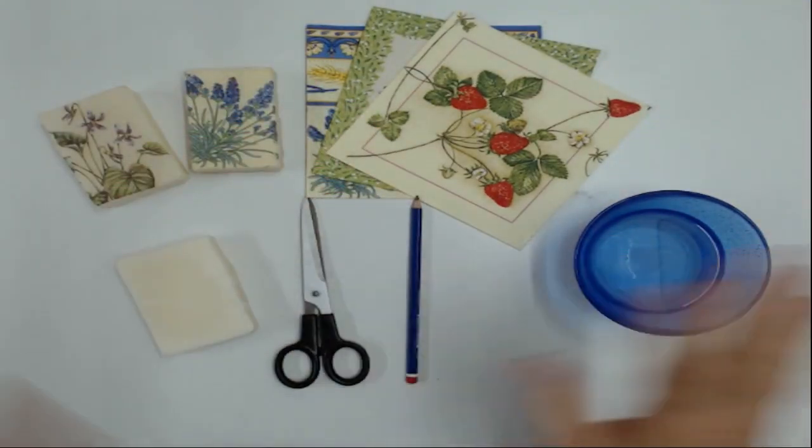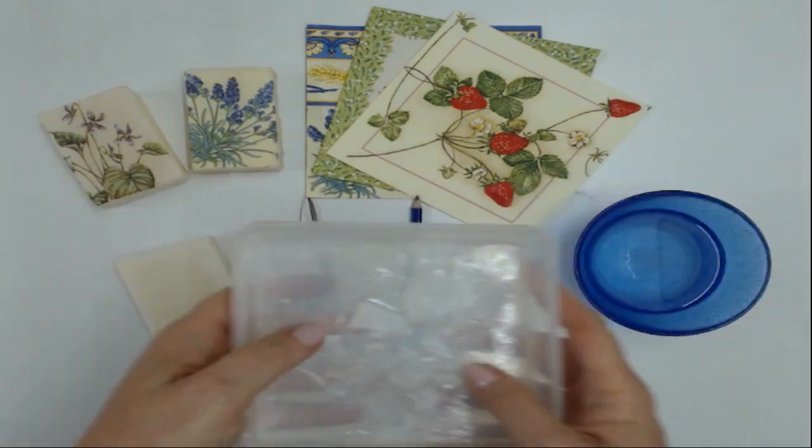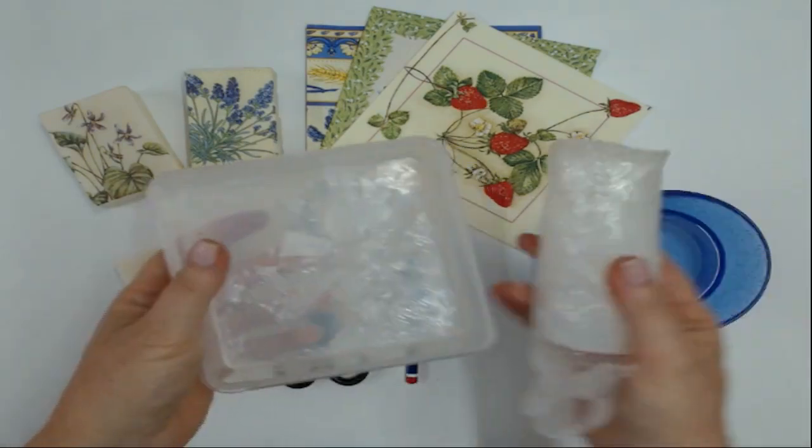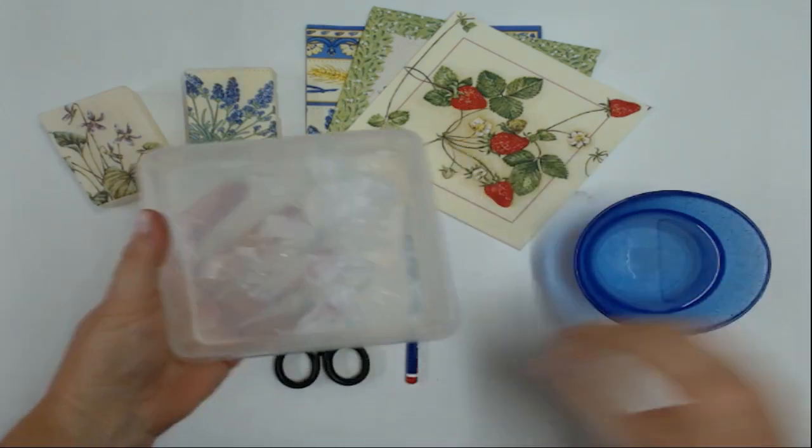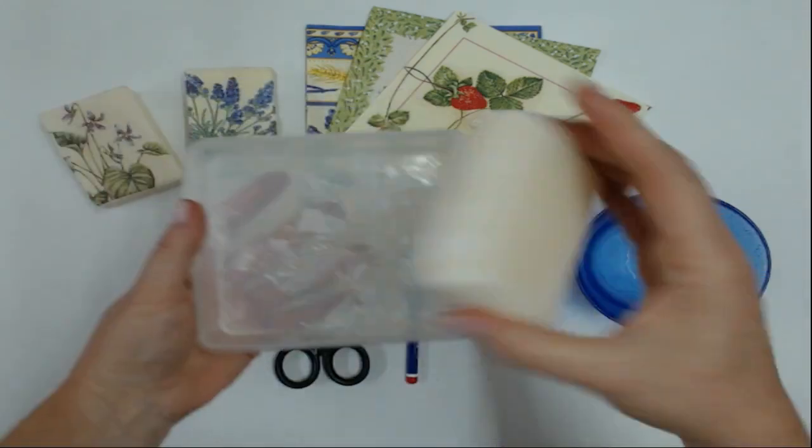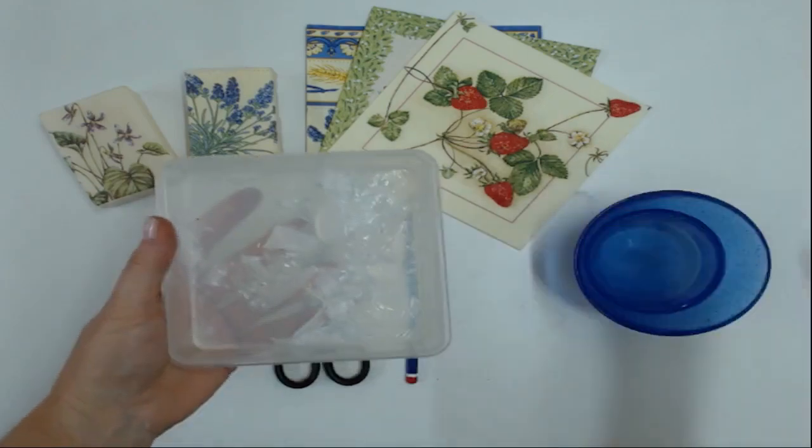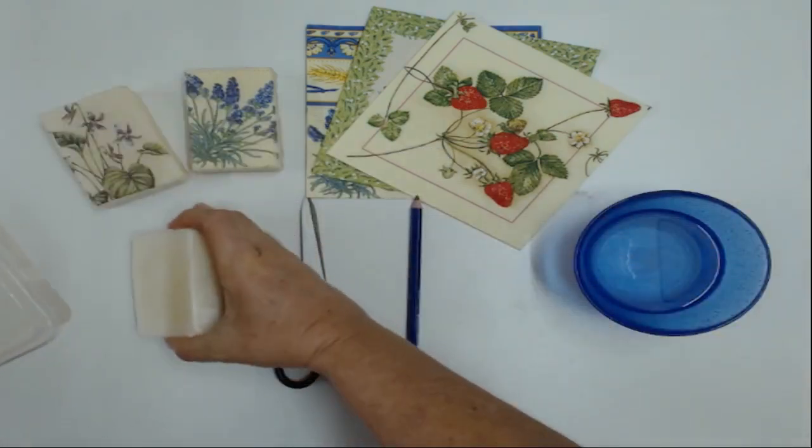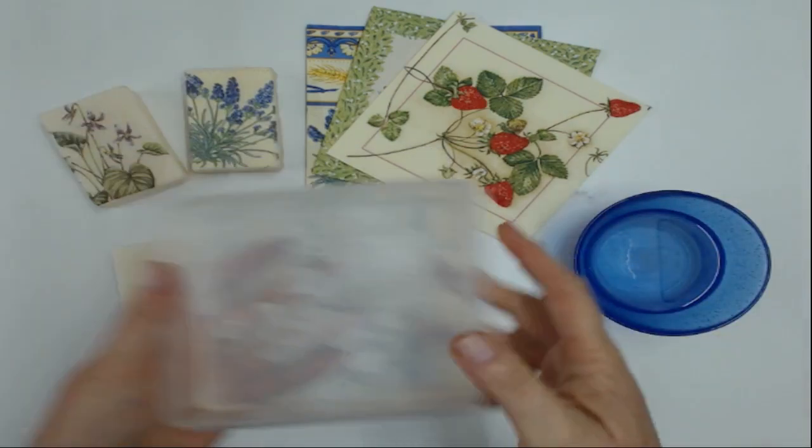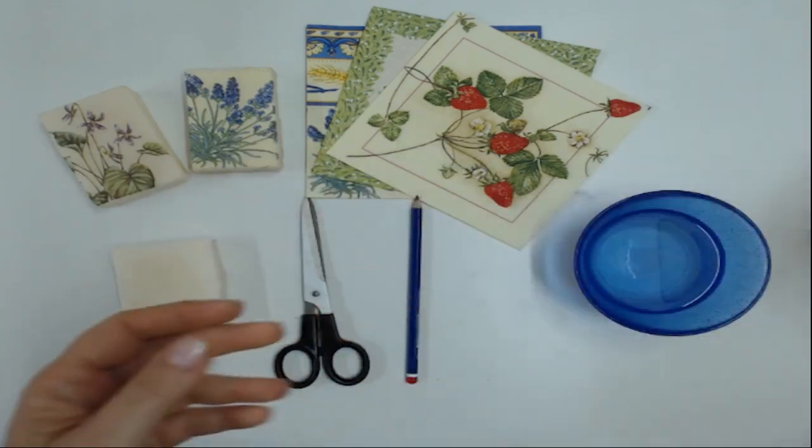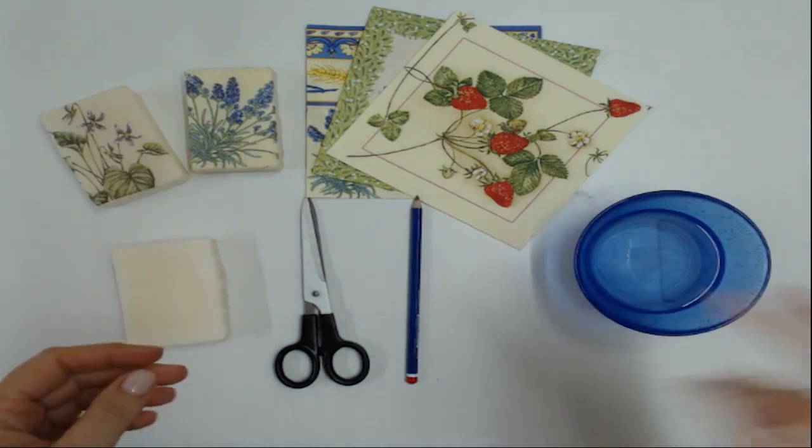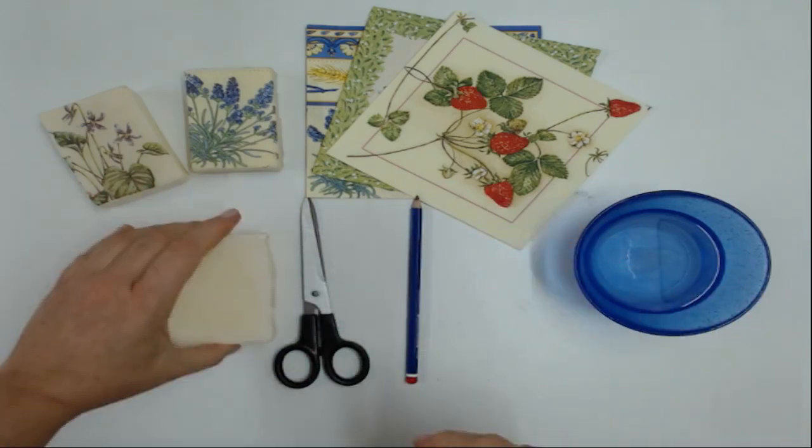I'm going to show you how to cover it with melt and pour soap so then you've got a little bit of a protective covering there. For that you are going to need a container that you can add your melt and pour soap in, and it must be large enough that you can dunk your soap eventually into this as well. So if you want to do the extra step then you're going to need some melt and pour soap, quite see-through one.